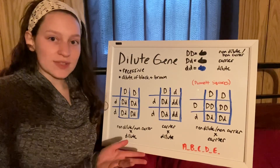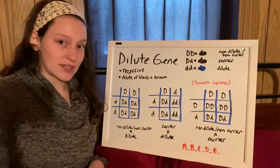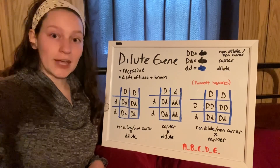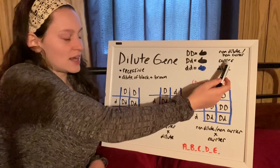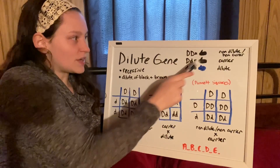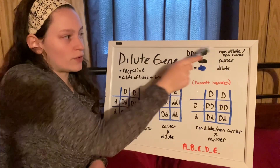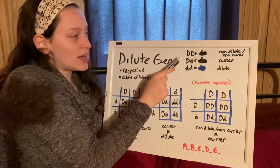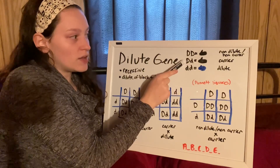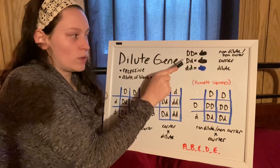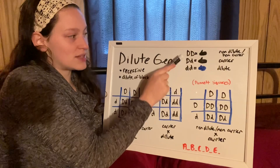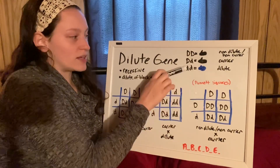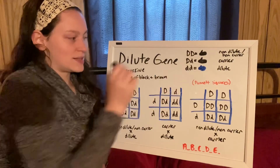However, with recessive genes, you can have a rabbit that does not present as this variety but carries it, in which case it's a carrier. A non-dilute with no carrier is going to be two capital D's. A carrier, which appears non-dilute but carries dilute, is capital D, lowercase d. And then a dilute, such as a blue or lilac, is going to be lowercase d, lowercase d.